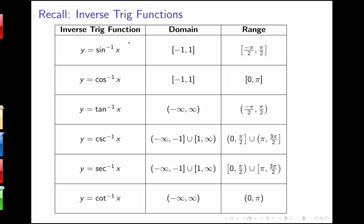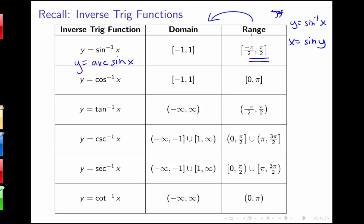Let's start by recalling what the domain and range are of our six inverse trig functions. We have sine inverse x, cosine inverse, tan inverse, cosecant inverse, secant inverse, and cotangent inverse — also expressible as arc sine, arc cosine, arc tangent, etc. The domain of the inverse sine function is from negative 1 to 1 with a range from negative pi over 2 to pi over 2. If y equals sine inverse x, then x equals sine of y when y is in this restricted domain. The domain of the inverse function and the range of the original function correspond to each other.